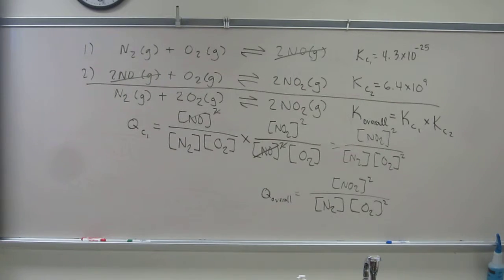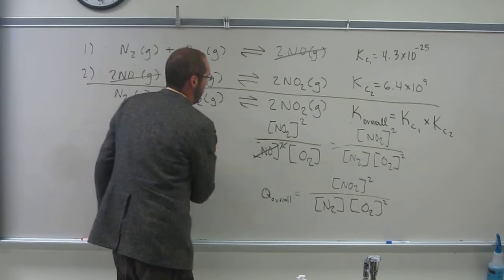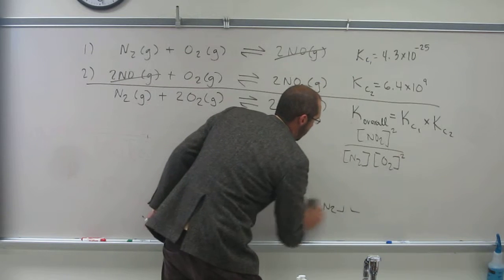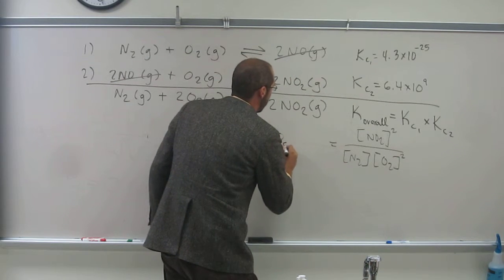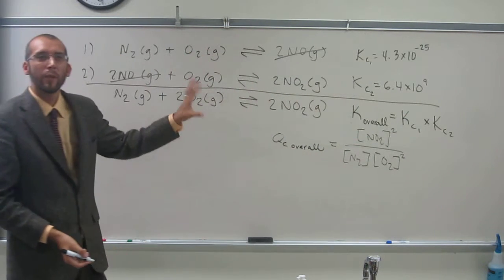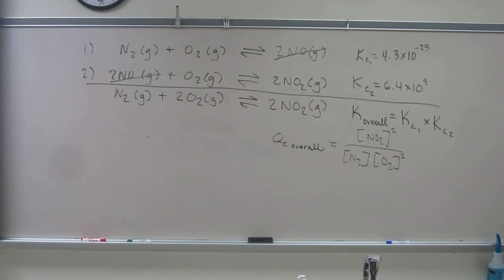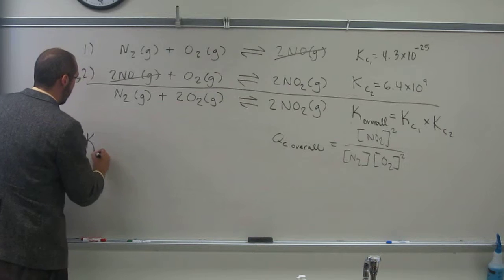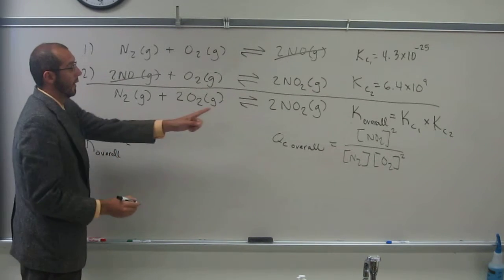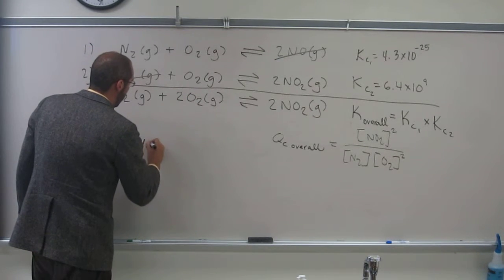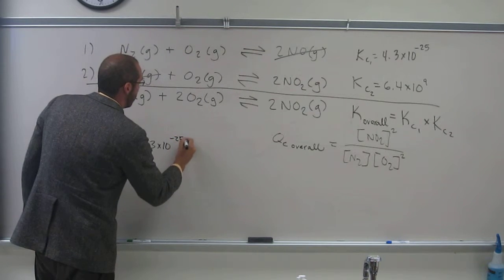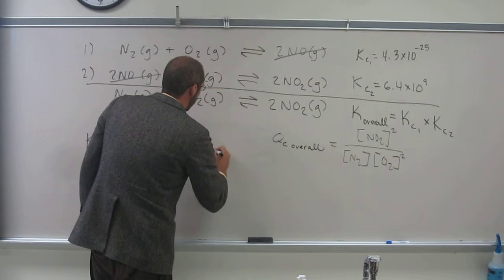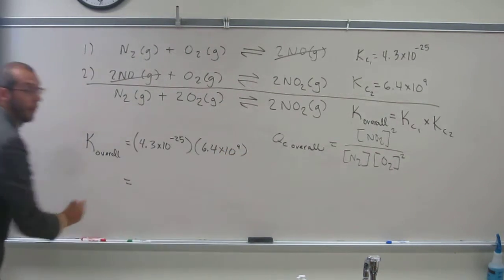I'm going to have to erase some of this to do the next part. Has everybody got this stuff proven now? I'm just going to say that's the QC overall. And we don't know if this reaction is at equilibrium or not at equilibrium because we don't have any values of the concentration units. But we could figure out what the overall K would be by multiplying the two Ks together. So K overall is going to be exactly what we showed there. KC1, so 4.3 times 10 to the negative 25, times KC2, which is 6.4 times 10 to the ninth.